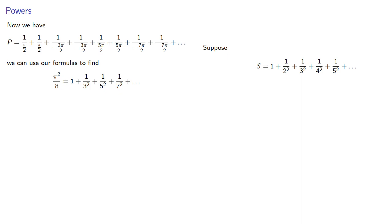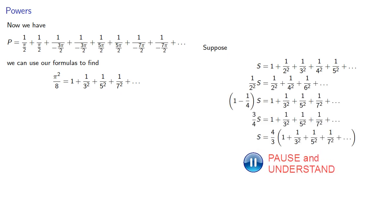Suppose s is this sum of reciprocal squares. If we do a little bit of algebra, we find that s equals the sum of odd reciprocal squares plus the sum of even reciprocal squares. And here we have the sum of the reciprocals of the squares of the odd numbers, which we know to be pi squared over 8, and so that says that s is pi squared over 6.